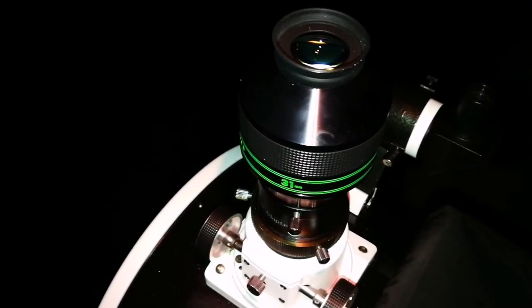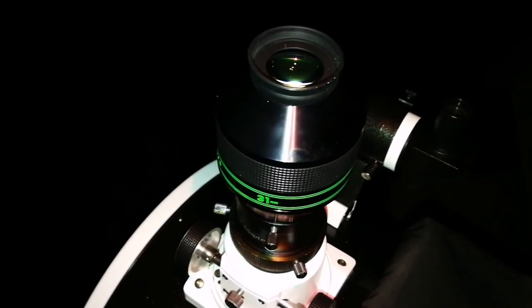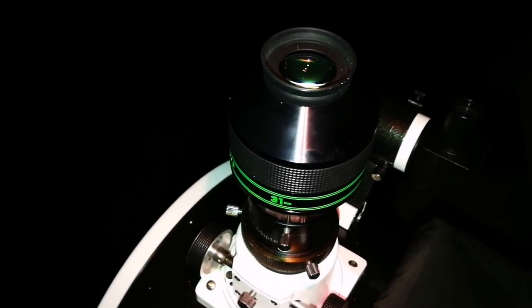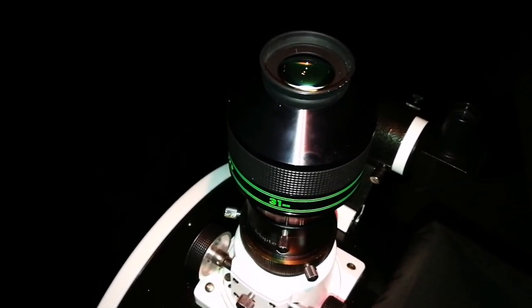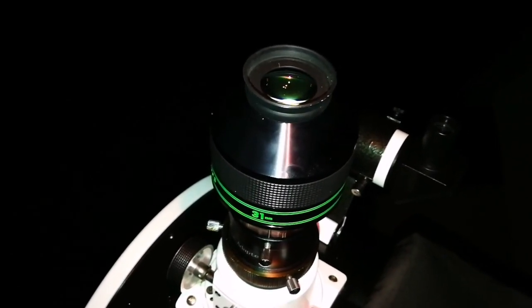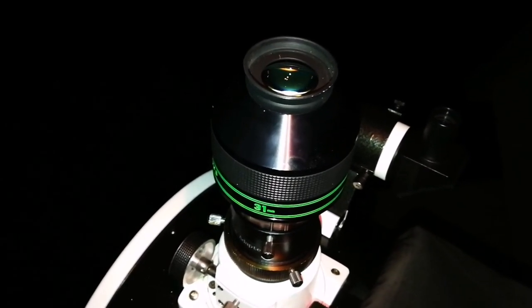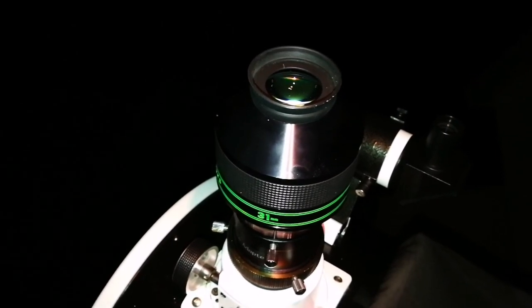I can see the Veil Nebula is not as bright as M42, for example, the Great Orion Nebula. But when you get used to the size of it, you can see that it is actually wispy, grayish kind of appearance in the eyepiece with this oxygen-III filter.